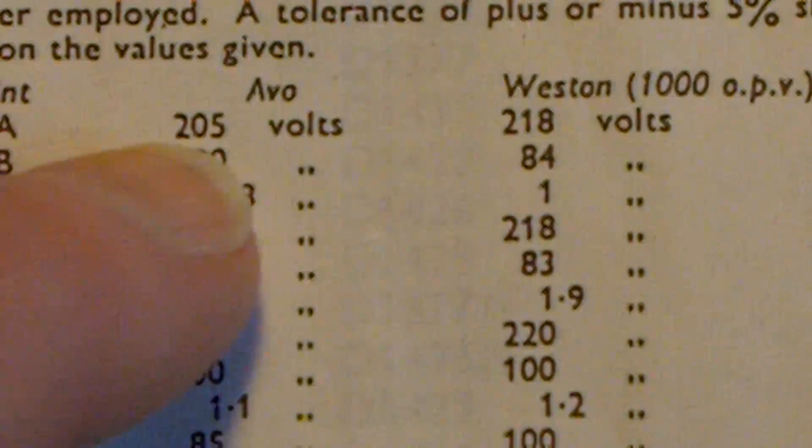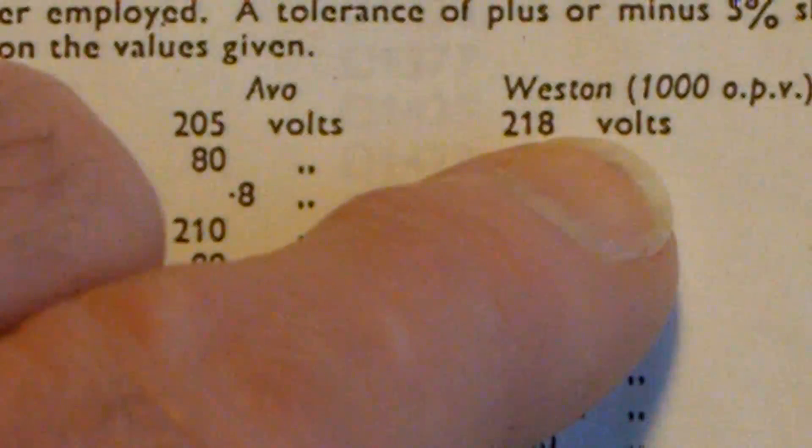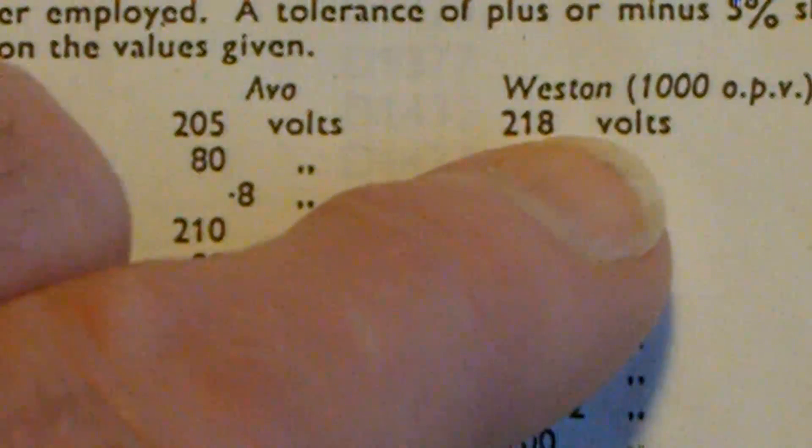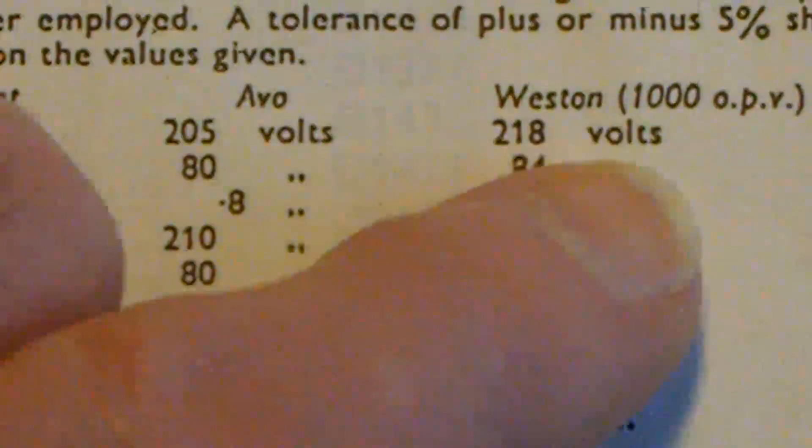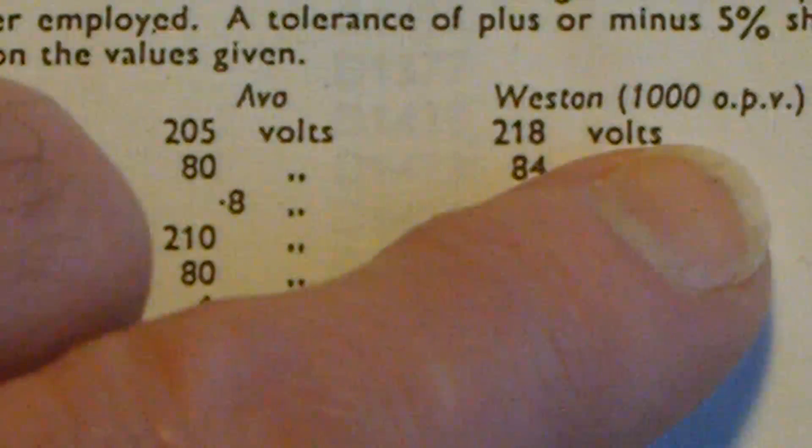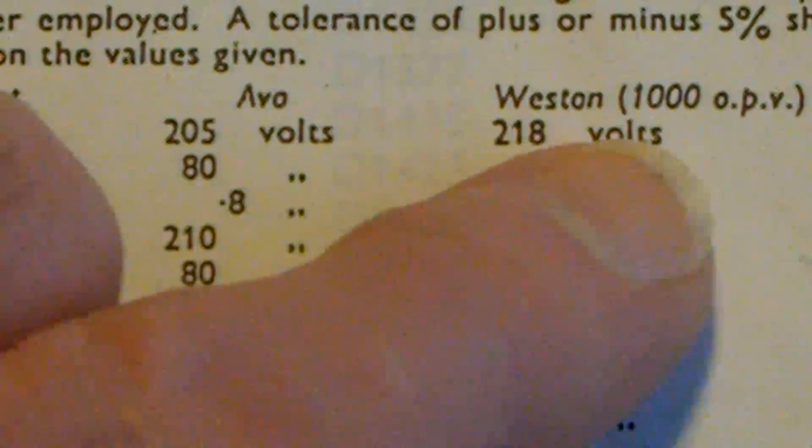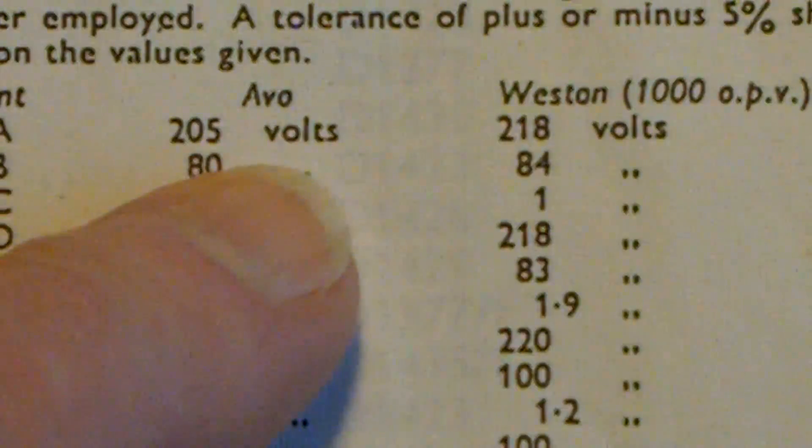And that explains the difference between these two readings. So your modern volt meter, if you're looking at a high resistance or high impedance circuit, you'll read a slightly higher voltage than you would do with a meter that has quite a low resistance.